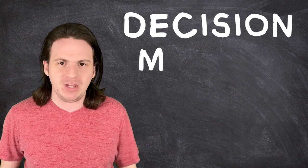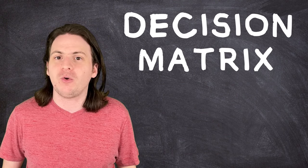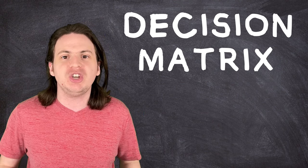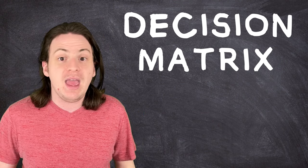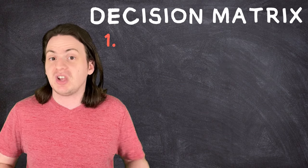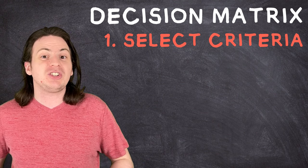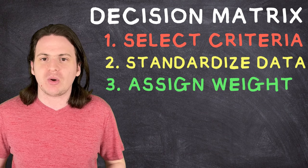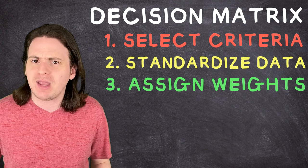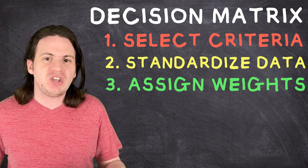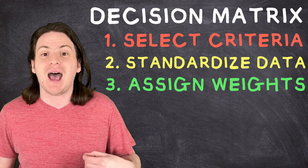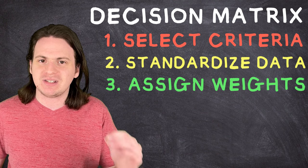To do this, we're going to be using a statistical model called a decision matrix. For those of you who are new to the channel and haven't seen me use this before, a decision matrix is a method used in science and engineering to objectively rank things based on a number of criteria. It comes in three simple steps. First, you select the criteria that you want to judge everything on. Then you standardize those criteria to make them easier to compare. And lastly, you weight each criteria in order from most important to least important. It sounds complicated, but when all is said and done, we should have a simple score out of 10 possible points for every single pal in the game. Whichever one has the highest score is statistically the strongest pal.